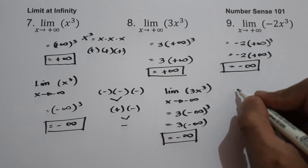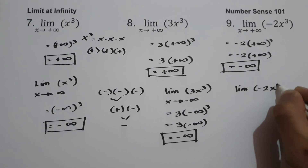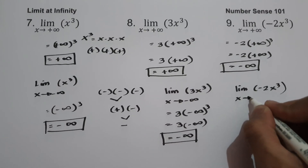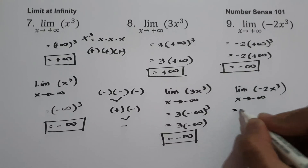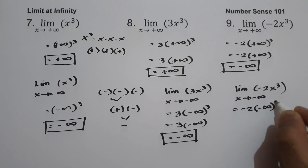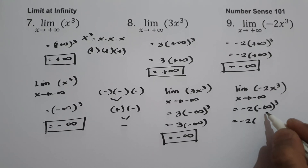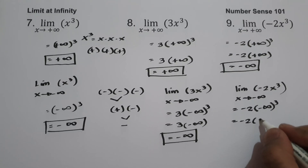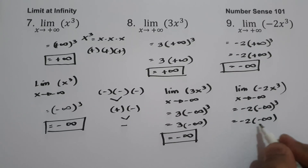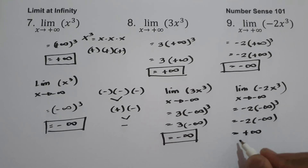If we have the limit of negative 2x cubed as x approaches negative infinity, we get negative 2 times negative infinity raised to 3. Negative infinity raised to 3 is negative infinity, and negative 2 times negative infinity gives us positive infinity.